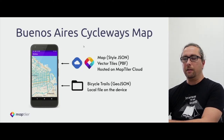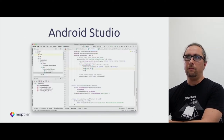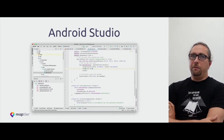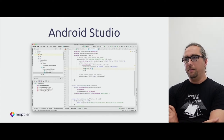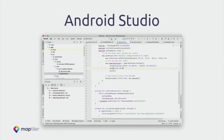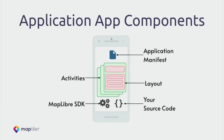To build an application for Android you need Android Studio, which is the official development tool from Google. It's built on top of IntelliJ — a powerful editor — and it comes with Gradle, which is the build system for Android projects. It also comes with all the SDKs for Android devices, emulators, and more. This is what you want to use when building projects for Android.